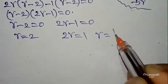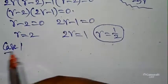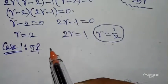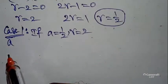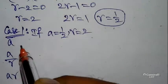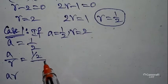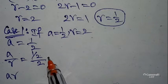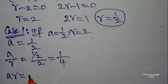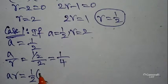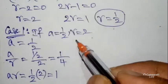Case 1: a = 1/2, r = 2. The three roots are: a/r = (1/2)/2 = 1/4; a = 1/2; ar = (1/2) × 2 = 1. So the roots are 1/4, 1/2, and 1.